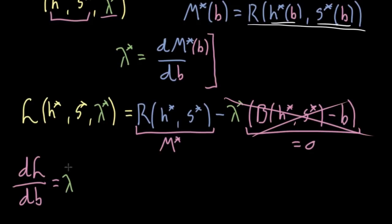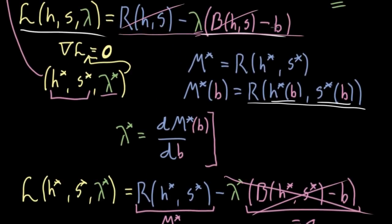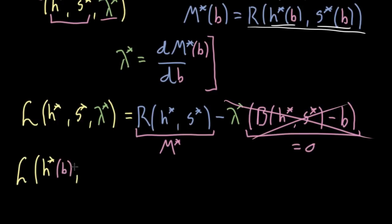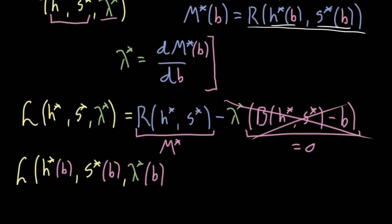That's compelling, but ultimately it's not entirely right — it overlooks the fact that L is not actually defined as a function of b. When we defined the Lagrangian, we were considering b to be a constant. So if you really want to consider this as a function involving b, we should write the Lagrangian as a function of h*(b), s*(b), and lambda*(b). As soon as we start considering b a variable, we have to acknowledge that the critical point h*, s*, lambda* depends on the value of b.